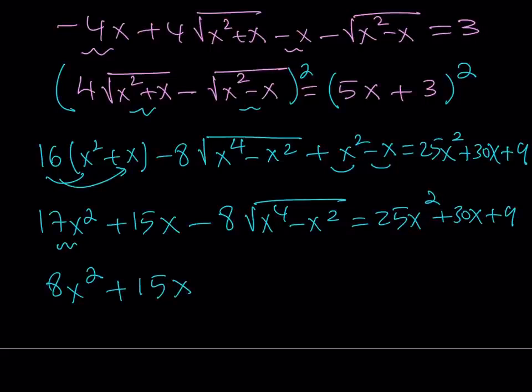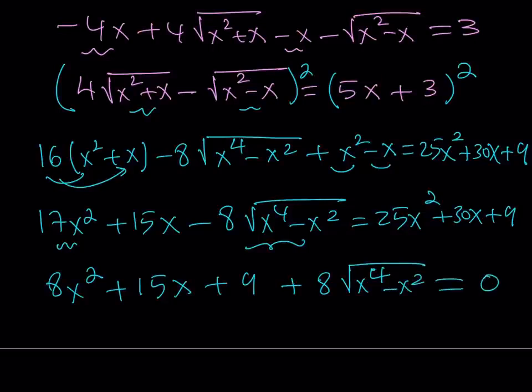And then I don't have any constant terms on the left-hand side. The only constant I have is going to be 9. So I'm going to write that. And I'm adding this radical term here to both sides. So that's going to give me plus 8 times the square root of x to the 4th minus x squared. And the whole thing is equal to 0. Great.